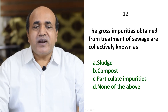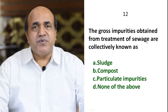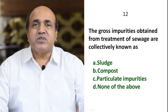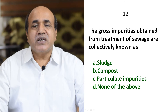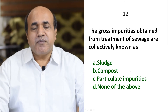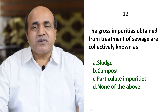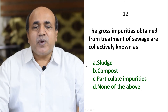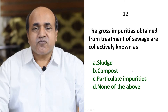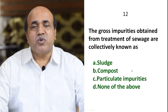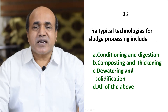Question 12: The gross impurities obtained from treatment of CVs are collectively called — slush, compost, particulate impurities, or none of the above? Compost is a part of it but gross impurities from CV treatment are called slush. Particulate impurities is not correct. So A — slush — is the correct answer.